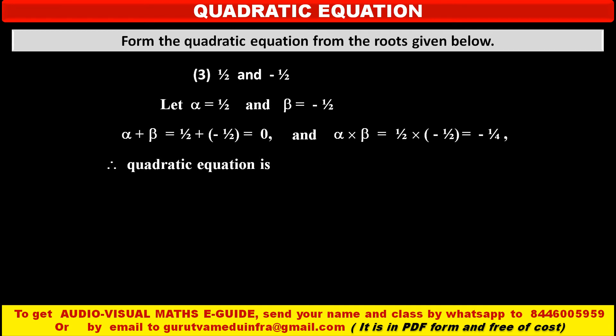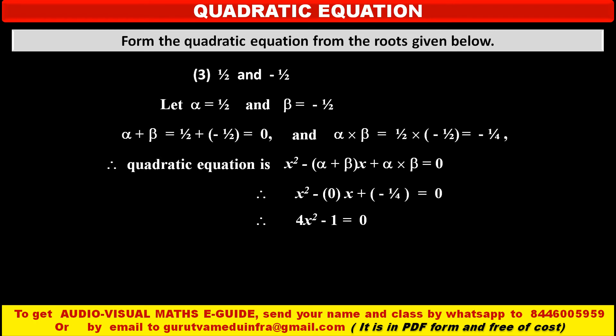Therefore, the quadratic equation using the formula x squared minus, alpha plus beta, into x, plus alpha into beta, equals 0, gives us x squared minus 0 into x, plus minus 1 upon 4, equals 0. Since the constant term has denominator 4, multiplying both sides by 4 we get 4x squared minus 1 equals 0. The coefficient of x is 0 so that term is removed. This is the required quadratic equation.